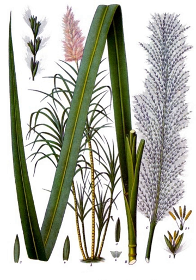Sugarcane is the world's largest crop by production quantity, with 1.9 billion tons produced in 2016, and Brazil accounting for 41% of the world total. In 2012, the Food and Agriculture Organization estimated it was cultivated on about 26 million hectares in more than 90 countries. The global demand for sugar is the primary driver of sugarcane agriculture. Cane accounts for 79% of sugar produced; most of the rest is made from sugar beets.